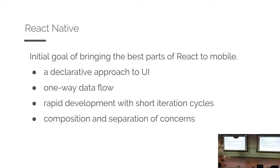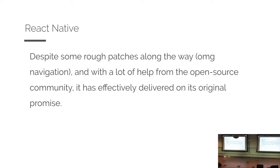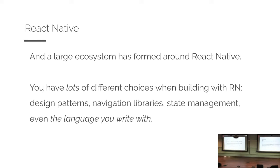React Native was the first kind of JavaScript-based cross-platform thing that was not a web view, not HTML and CSS — it used native components, which was fairly groundbreaking. And despite some rough patches along the way, like navigation which we've been through seven iterations of, with a lot of help from the open source community we've effectively delivered on that original promise: learn once write everywhere, almost as good as native but with the speed and agility of writing in JavaScript.